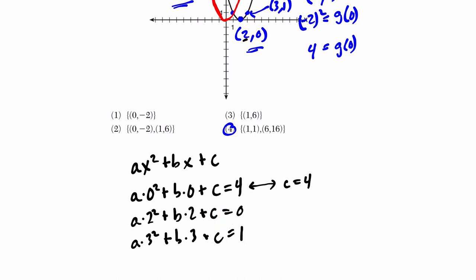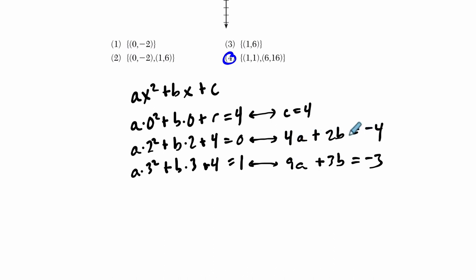So now we know the c part of our equation, ax squared plus bx plus 4. And that means in these two spots right here, instead of just writing a c, I could write a 4. And now I have a system of equations with two variables that I can solve. The first equation is 4a plus 2b. And I'm going to subtract the 4 over here, equals negative 4. My second equation becomes 9a plus 3b. And I'm going to subtract the 4 over to get negative 3.